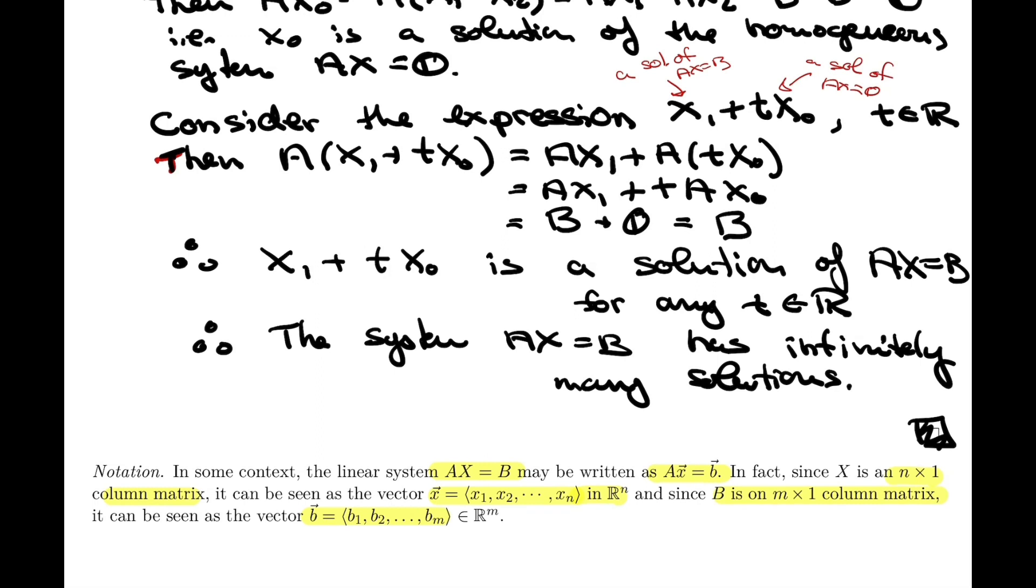So that's an alternative notation to AX equals B. But you'll see that we're going to stick mostly to this notation, where we consider a linear system as a matrix equation.